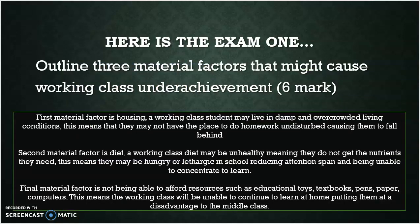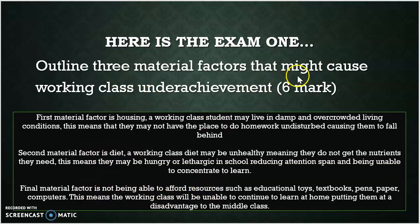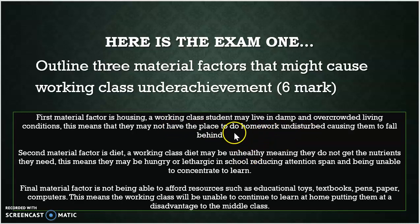Here's your exam question, and I wanted you to focus on applying good exam techniques. You get a point for the material factor that you correctly identify. So here I've got housing, diet, and poverty — not being able to afford resources. Then explain why it might cause working class underachievement, offering an explanation of why this would act as a barrier for their achievement within the school system. I've got three examples there, so hopefully you got six out of six. Massive well done if you have successfully answered those five little challenges from yesterday.